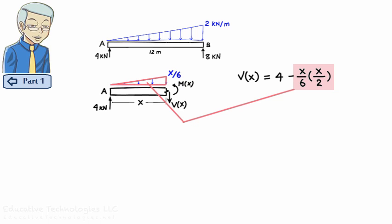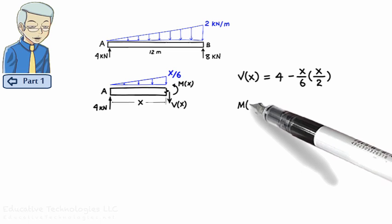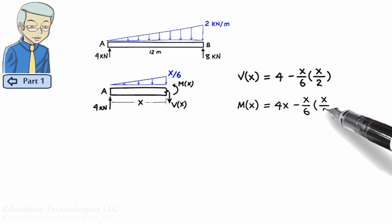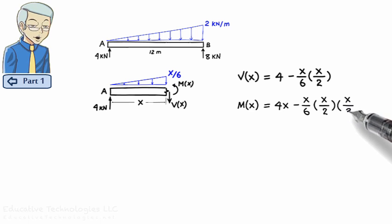Similarly, bending moment equation can be written as Mx equals 4 times x minus x over 6 times x over 2 times x over 3. Here, also, x over 6 times x over 2 represent the area of the load triangle, and x over 3 is the distance from the center of the triangle to the cut point.